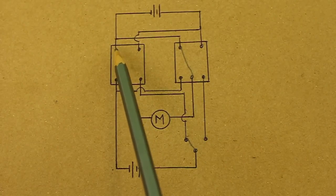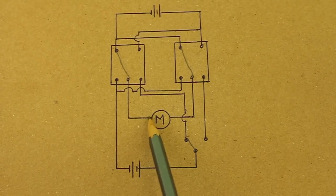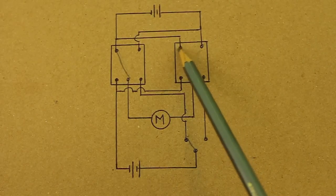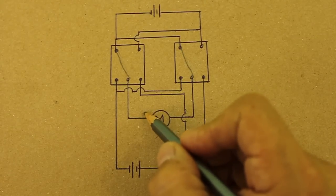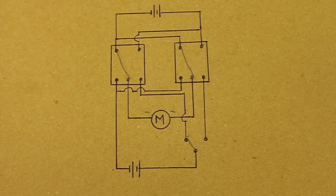So from here it goes to this contact of the motor, and from here to the other contact. So both poles of the motor are negative. And of course, the motor will not work.